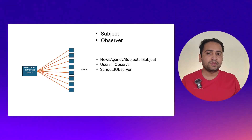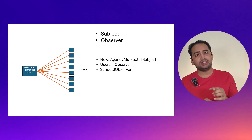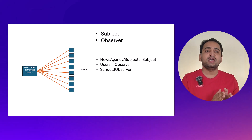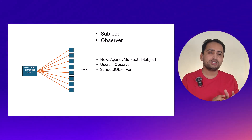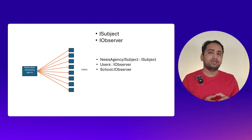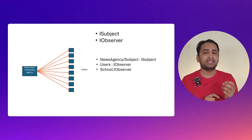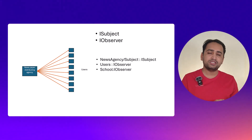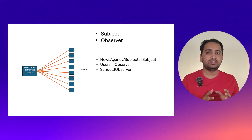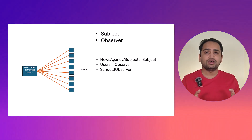Now let's talk about the classes we need to implement in this observer design pattern. First, we have to create one interface called ISubject — the publisher is the subject. On the right hand side we have these users and we call them observers. So we will create another interface for these users and the interface name is IObserver. You can give any meaningful name; there is no restriction. There is only one news agency, so we will create a class NewsAgency that inherits the ISubject interface, implementing the three methods: add new user, remove user, and notify. For the observer, there will be only one single method to receive the update coming from this news agency.